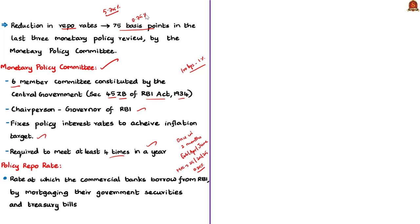The policy repo rate, also simply called the repo rate, is the interest rate that commercial banks pay to the Reserve Bank of India when they borrow money. Commercial banks mortgage government securities and treasury bills as collateral — similar to how individuals mortgage homes for loans from commercial banks.